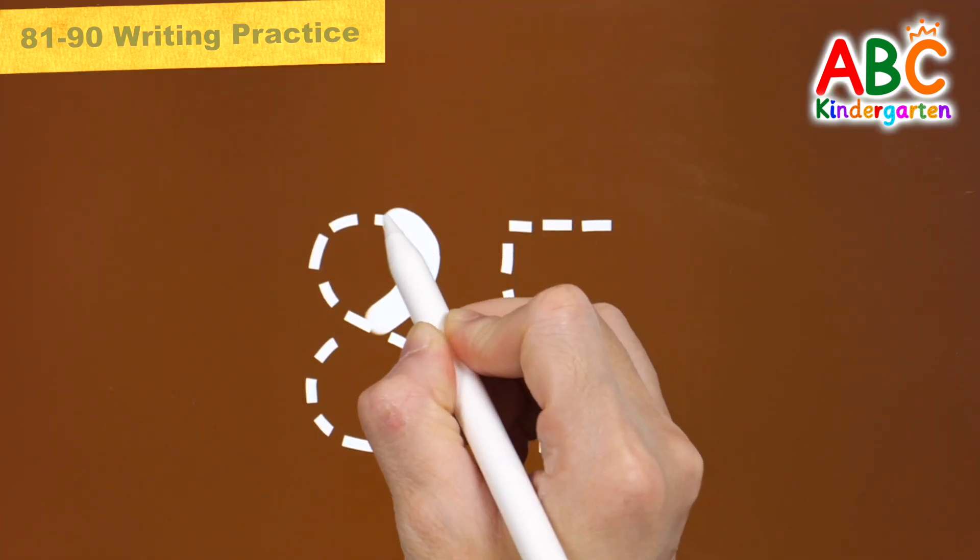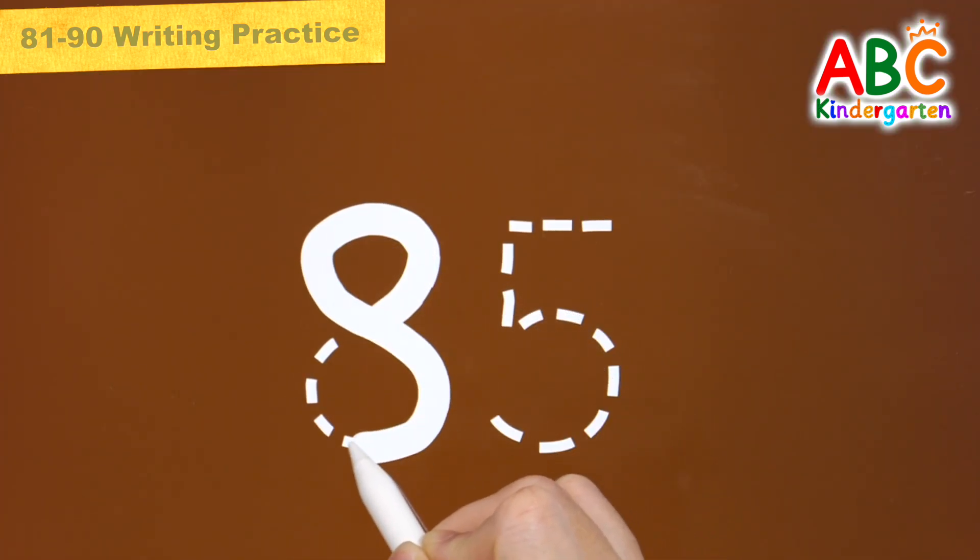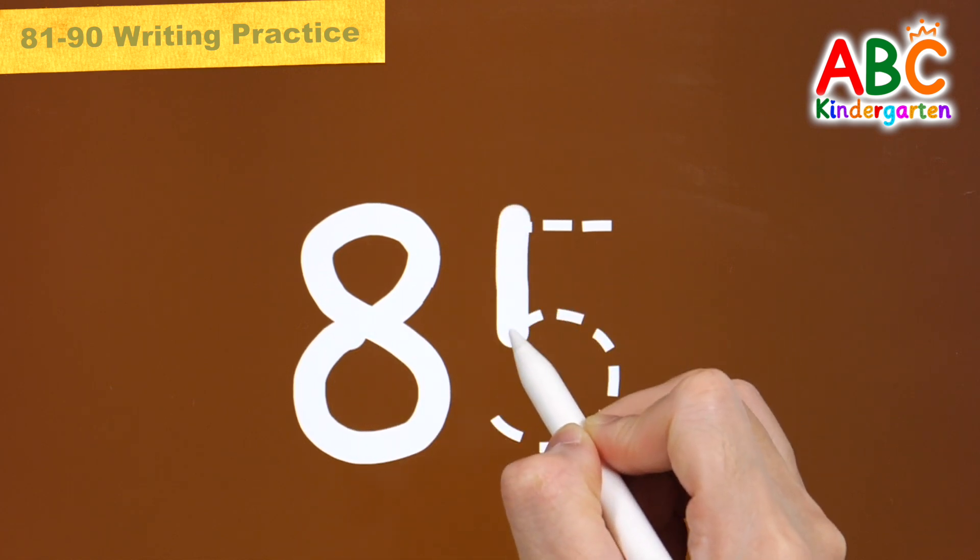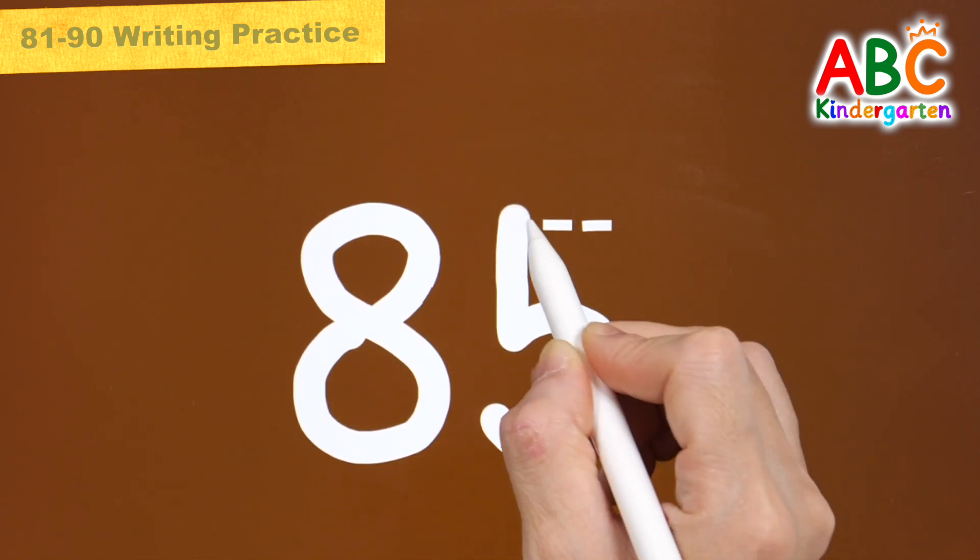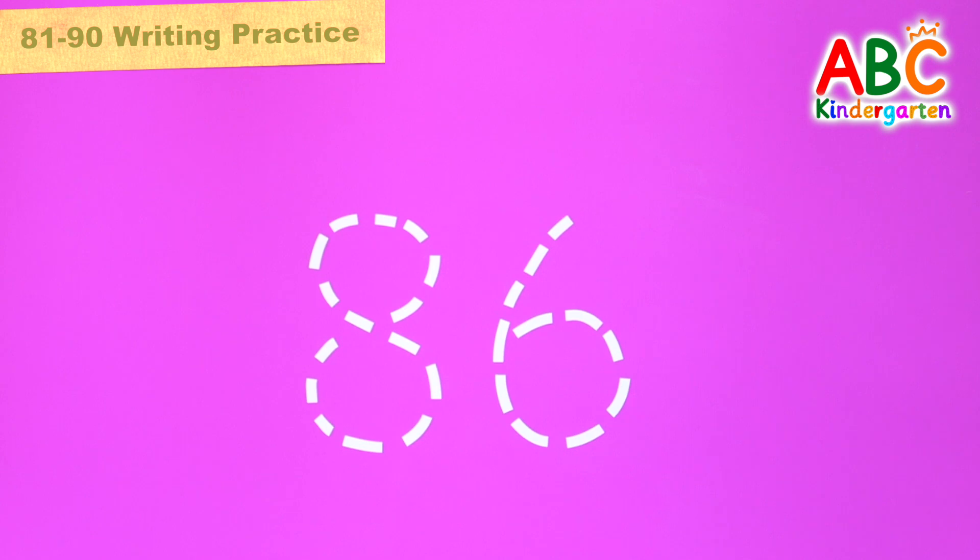Let's write 85 in white on brown. 85. Let's write 86 in blue on pink.